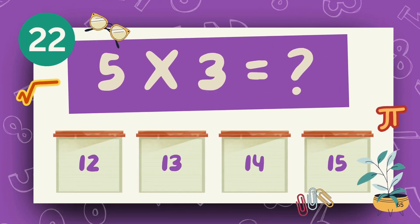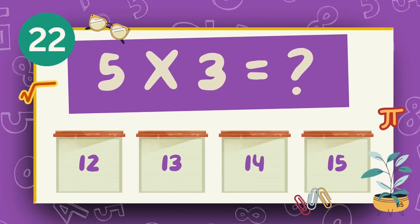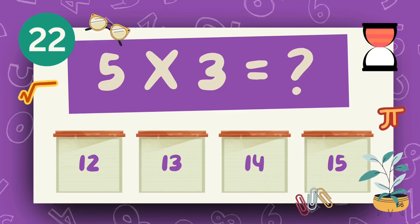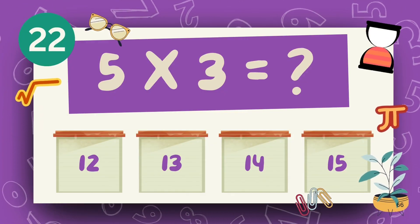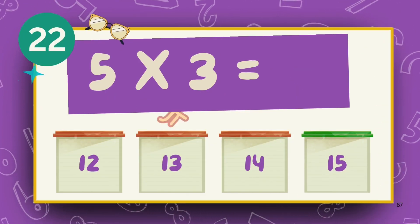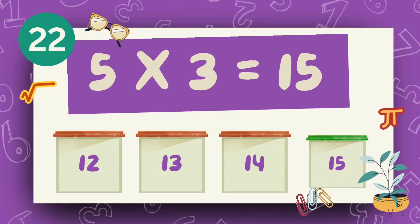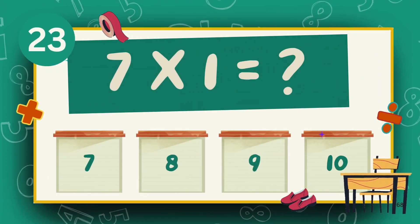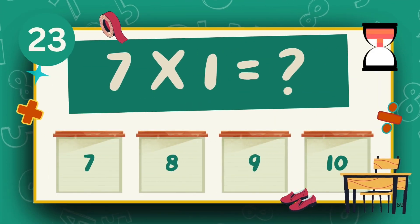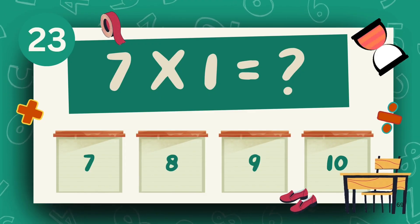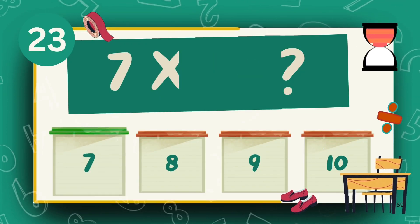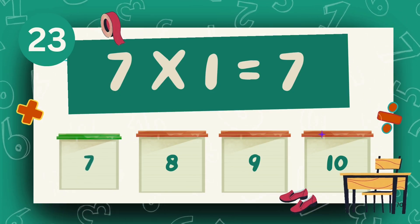What is 5 multiply 3? The answer is 15. What is 7 multiply 1? The answer is 7.